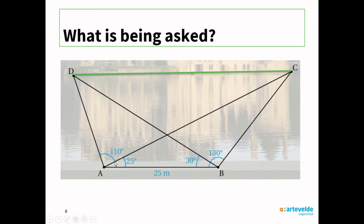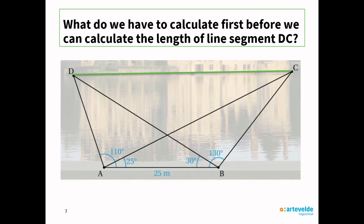We still don't have enough information to calculate the length of DC directly. In the previous part, we learned we can solve any triangle when a congruence theorem is given. One angle is already given, so looking at our summary we can use the side-angle-side congruence theorem — meaning we need to calculate line segments AD and AC. To solve the length of AD, look at triangle DAB: we already have two angles and one side, giving us the angle-side-angle congruence theorem. So we can calculate the whole triangle DAB. Using the sine rule, we can calculate the length of DA.